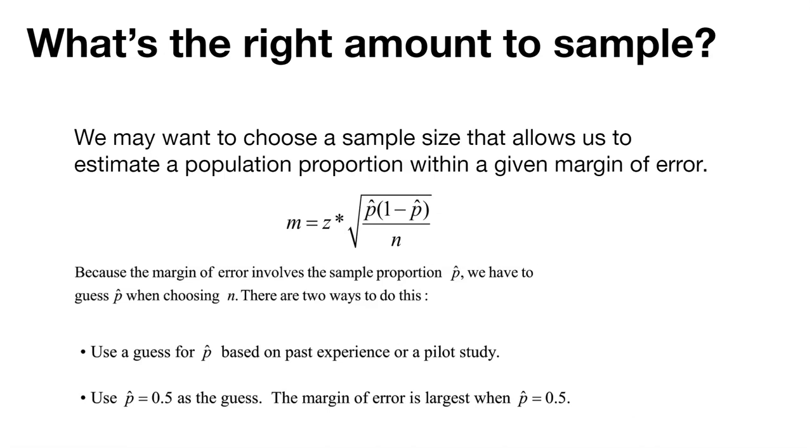So m here is going to equal what we'll call z star, and this is a value z from the z table. Our margin of error is going to be z star times the standard error.